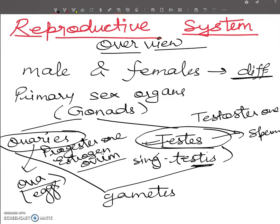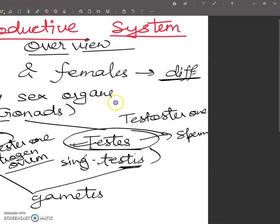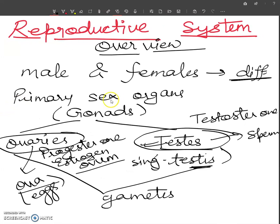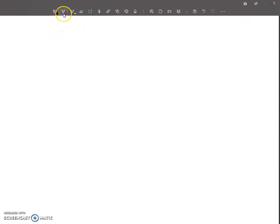Some accessory sex organs are also there, but they do not produce gametes. These are the accessory sex organs, and they are associated with the primary sex organs. They are working as accessory. Accessory organ or accessory sex organs.